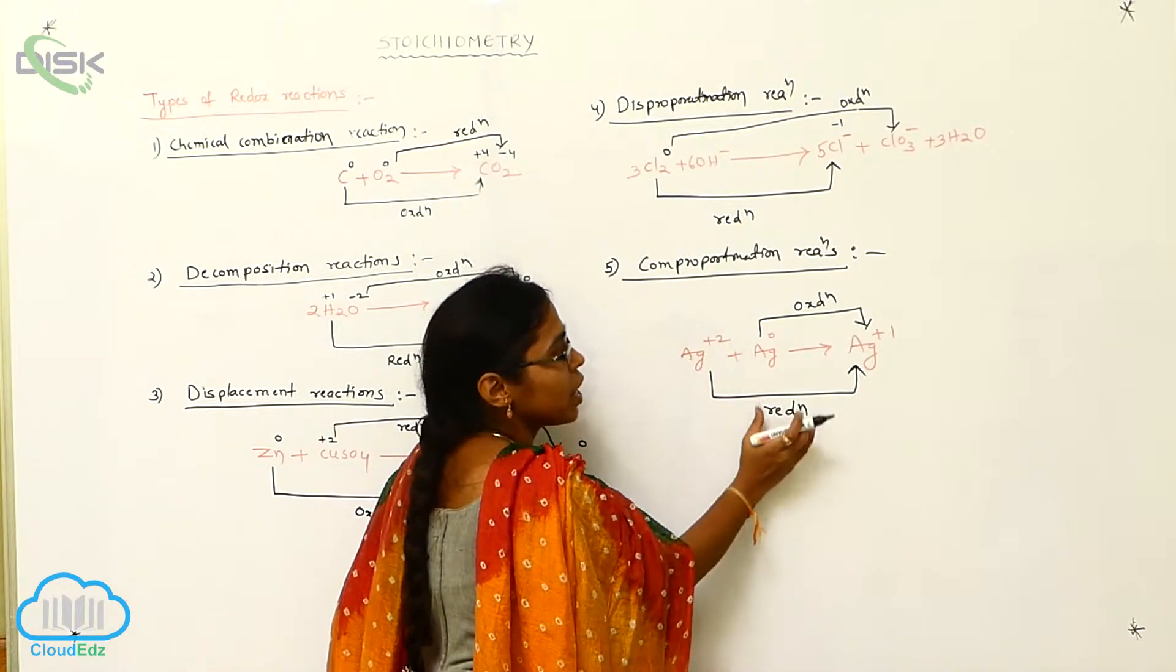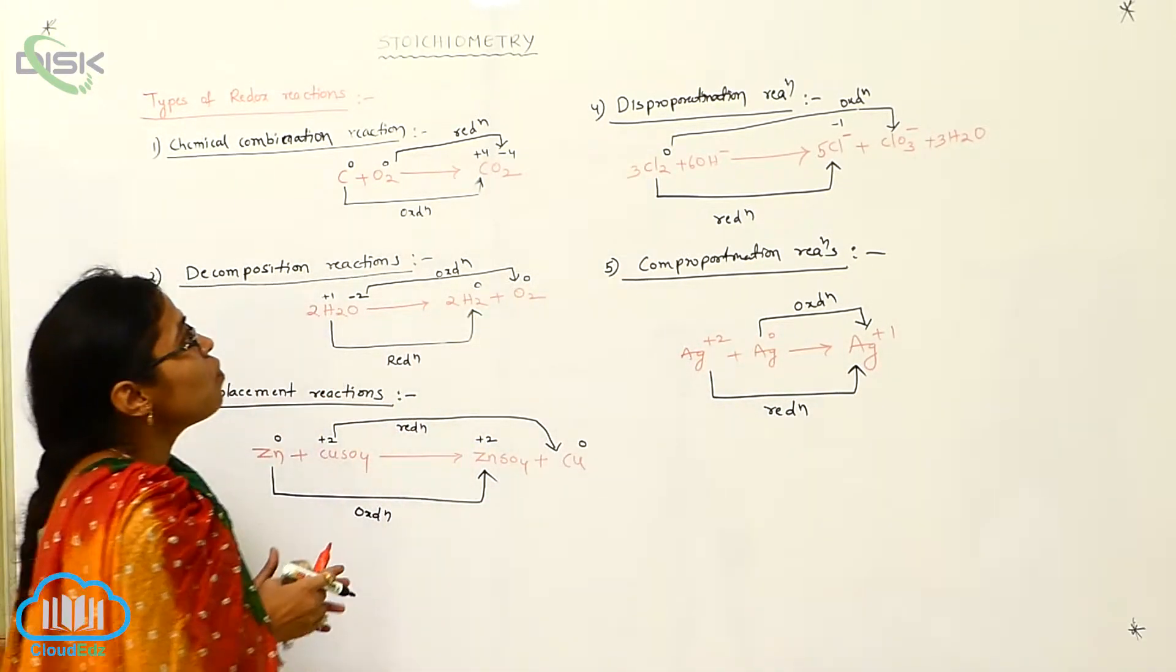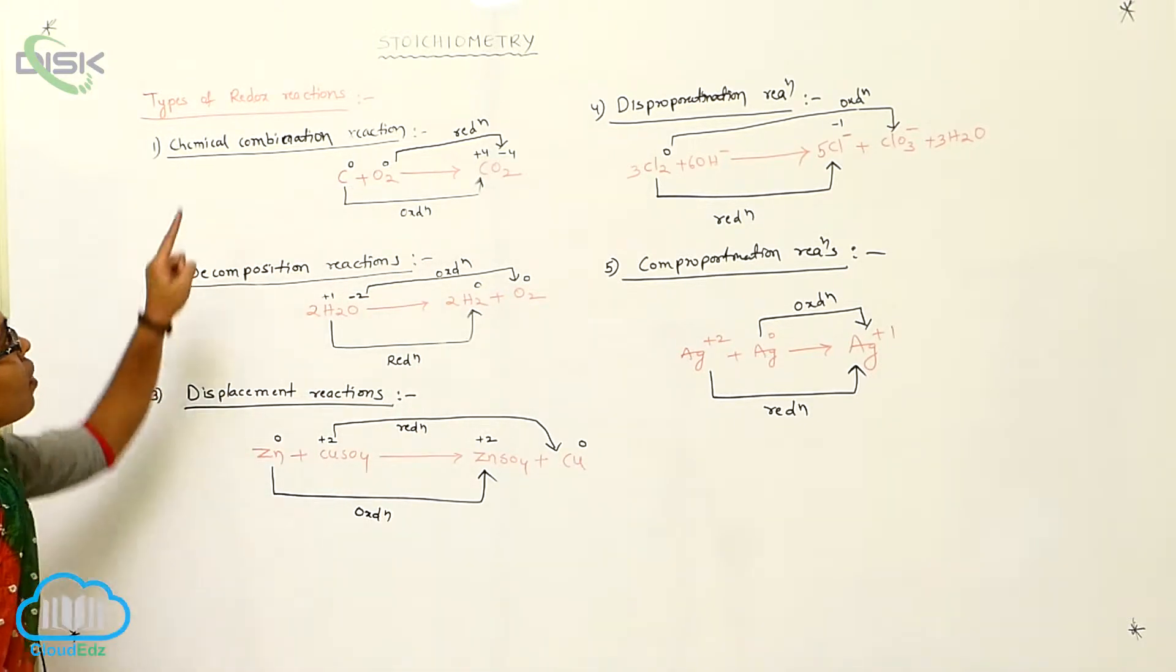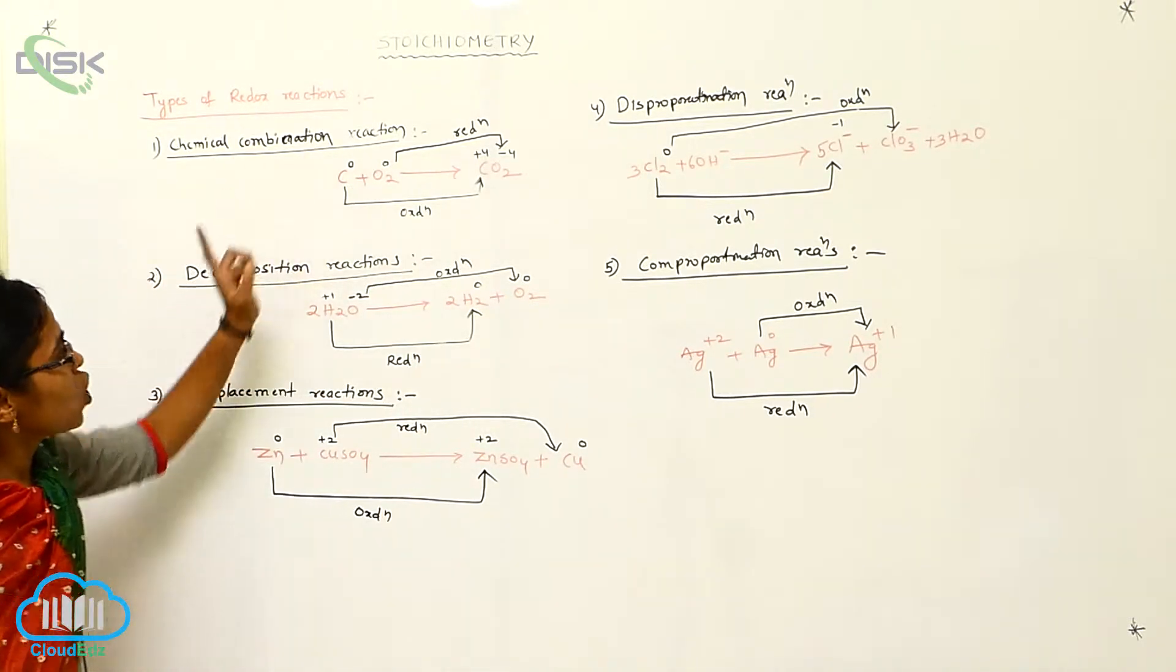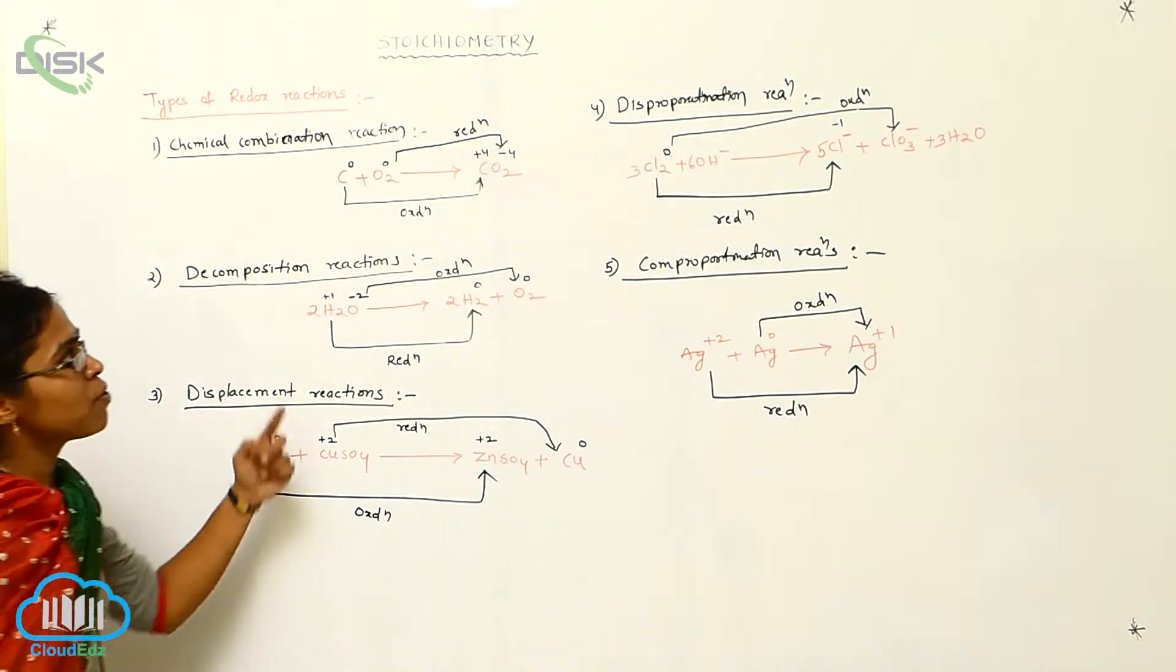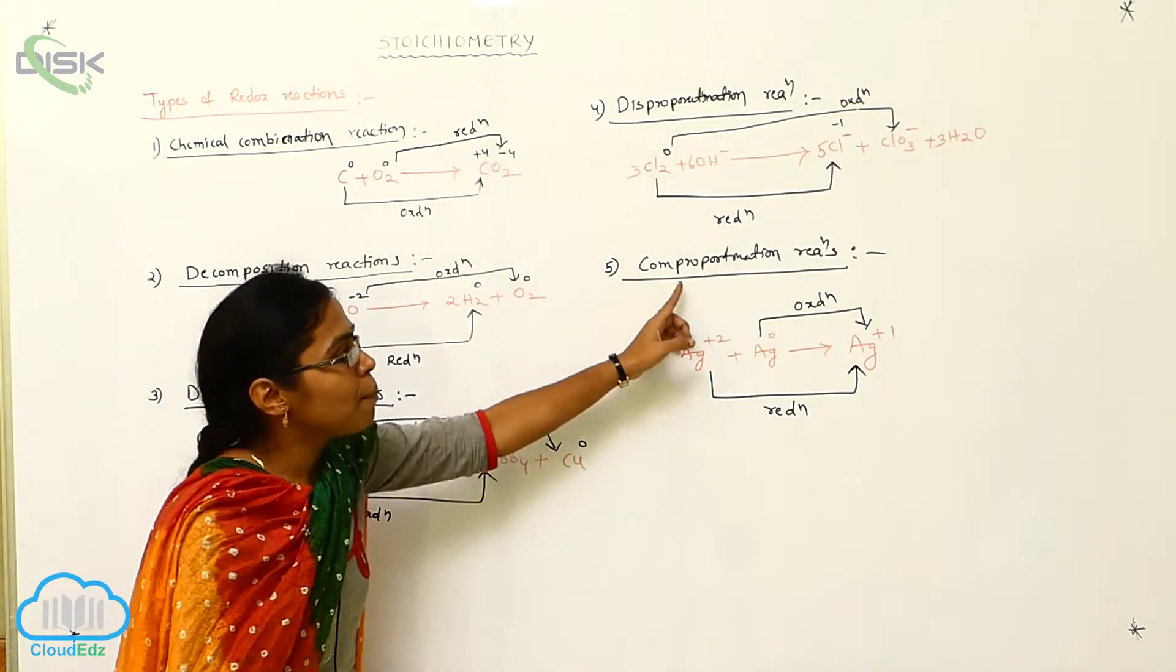So that also possesses reduction reaction and oxidation reaction. These are the types of redox reactions. Total, there are five types: number 1, chemical combination; number 2, decomposition; number 3, displacement; number 4, disproportionation; number 5, comproportionation.